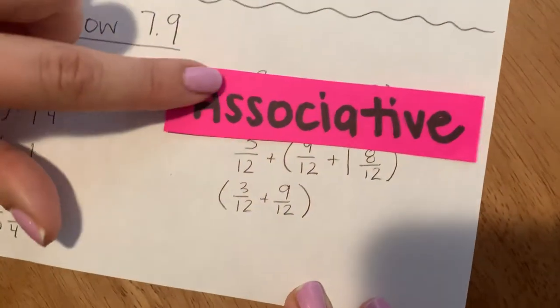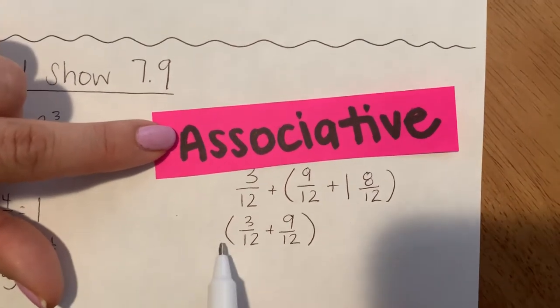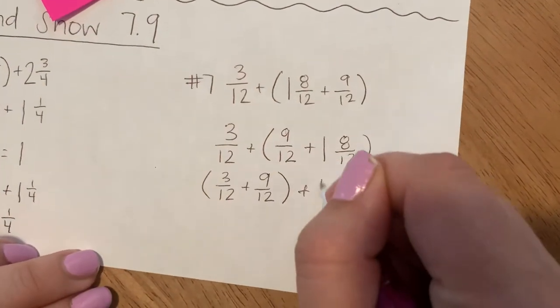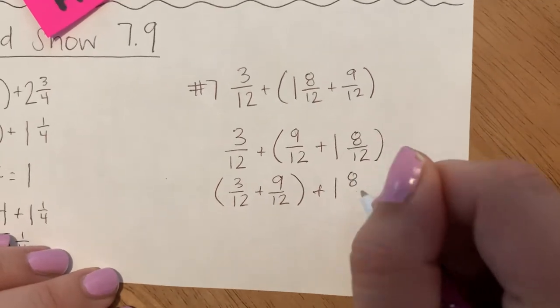Which would be the associative property. So I want to use my associative property to change what group I'm starting with. Then once I finish adding 3 twelfths plus 9 twelfths, then I'll add my other mixed number which is 1 and 8 twelfths.